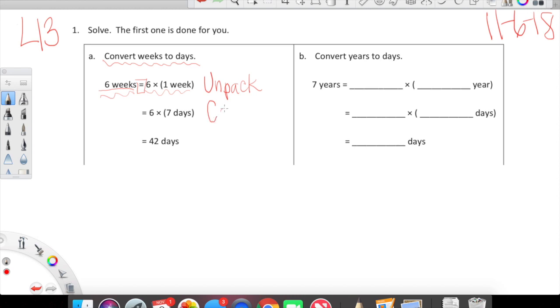The first line says 6 weeks equals 6 times 1 week - 6 copies of 1 week. The first line every single time is what I like to think of as the unpacking line. We're just unpacking what we have. 6 weeks has been given to us equals 6 copies of 1 week. The first line is our unpacking line.